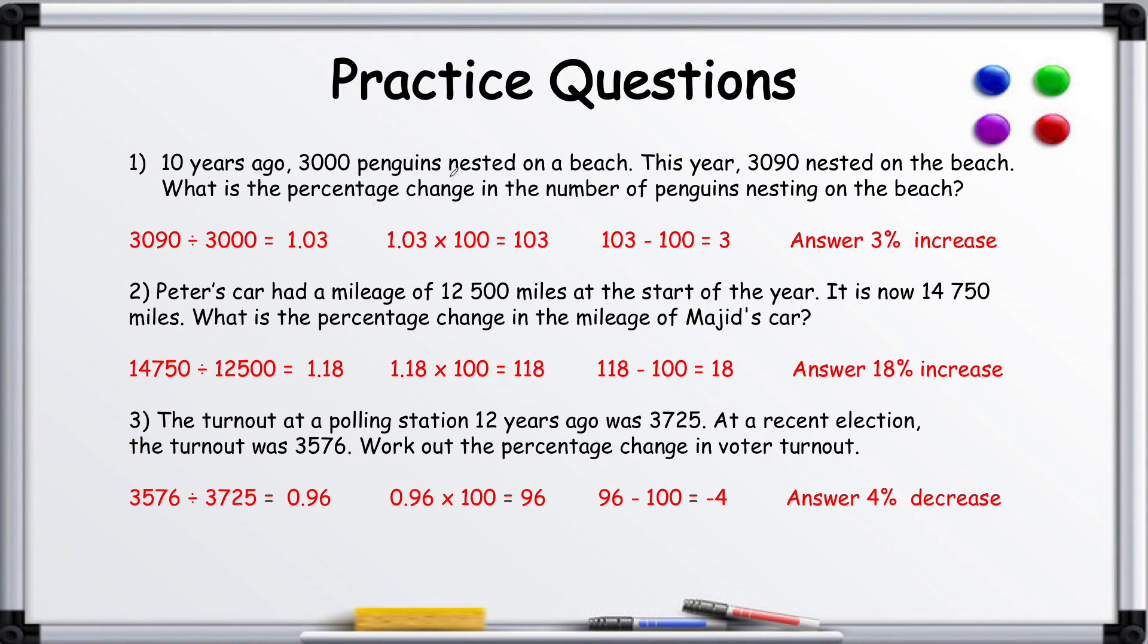10 years ago, 3000 penguins nested on a beach. This year, 3090 nested on the beach. So you divide that 3090 by 3000 and you're going to get 1.03.